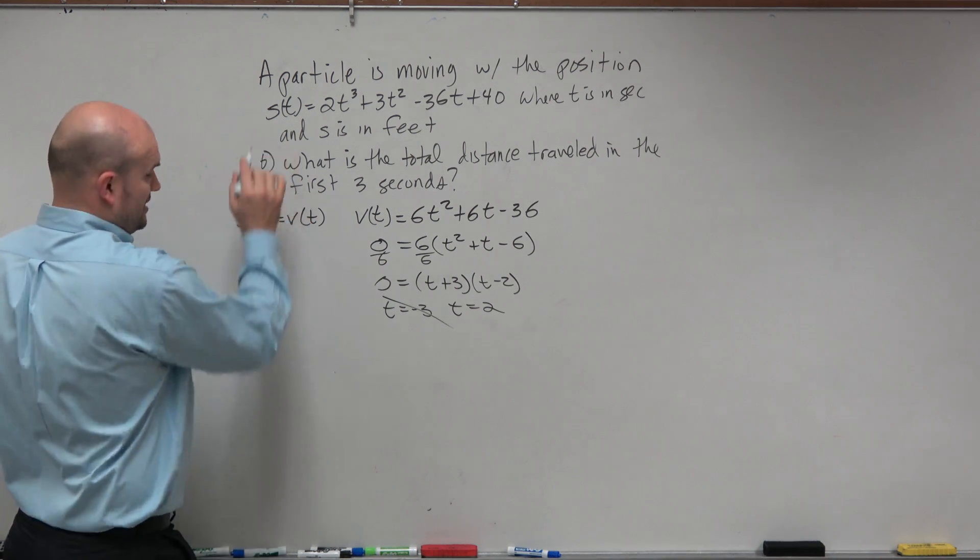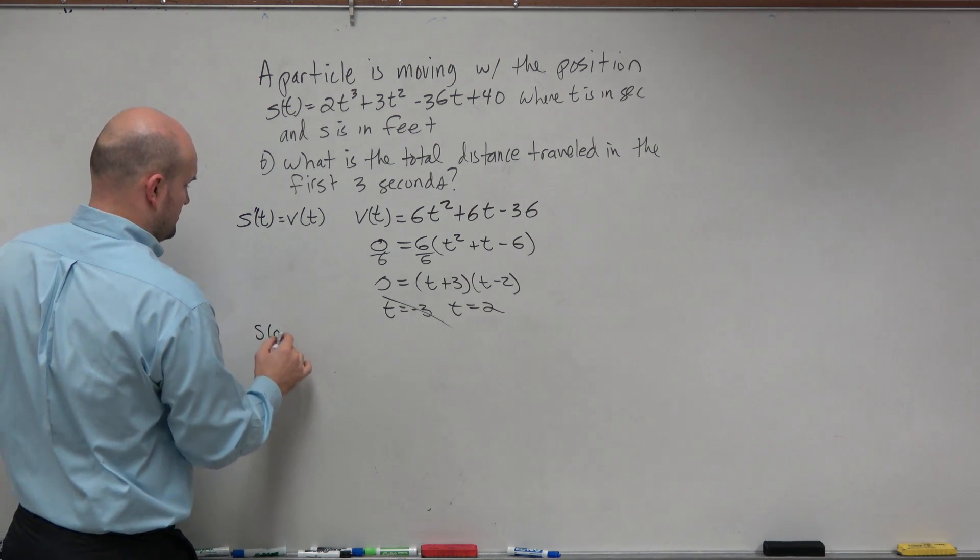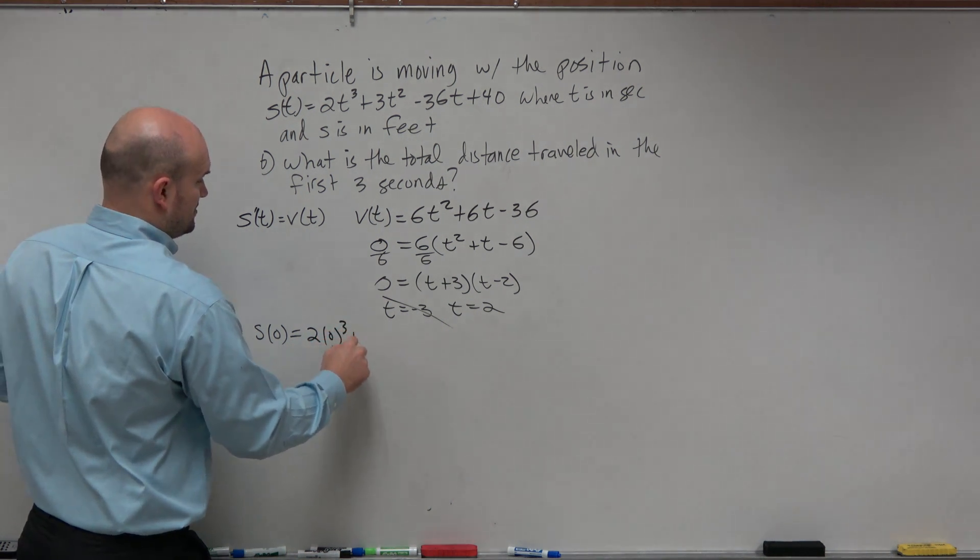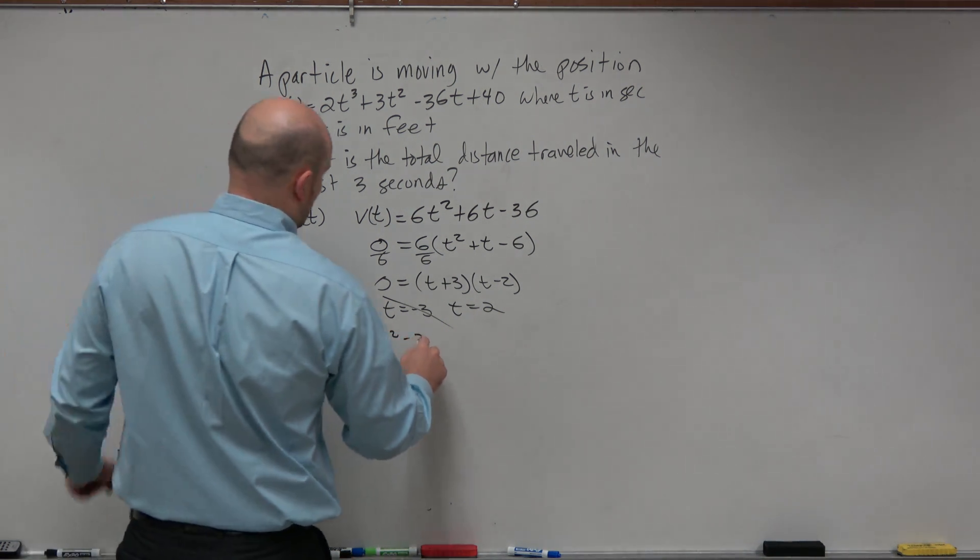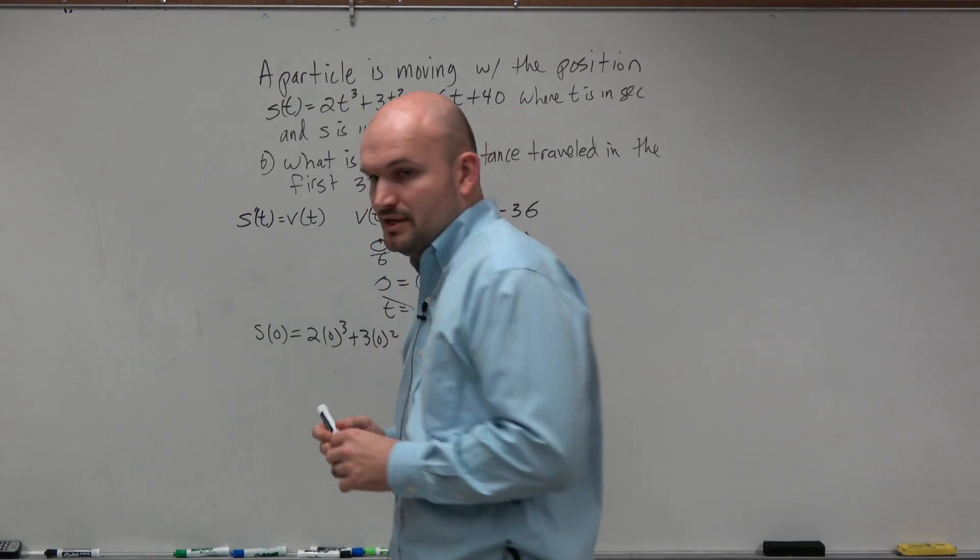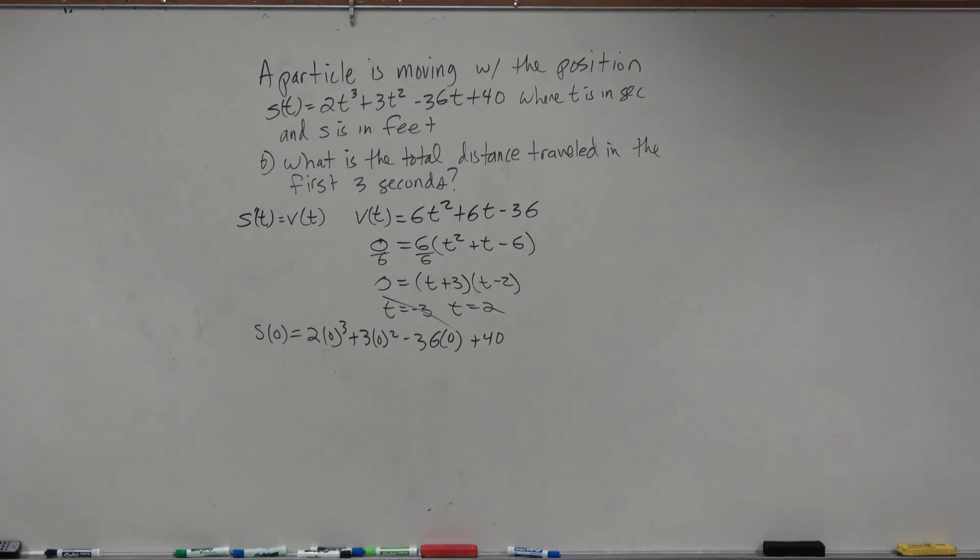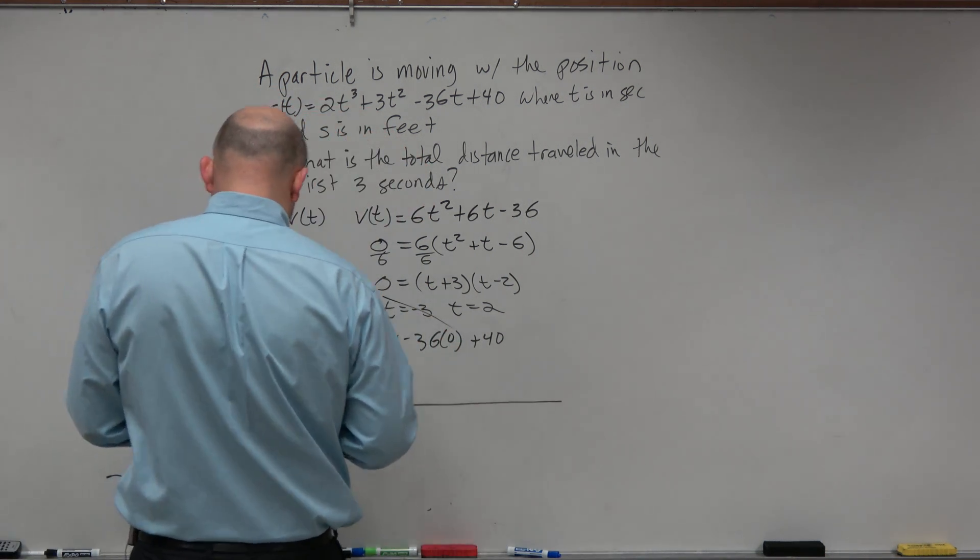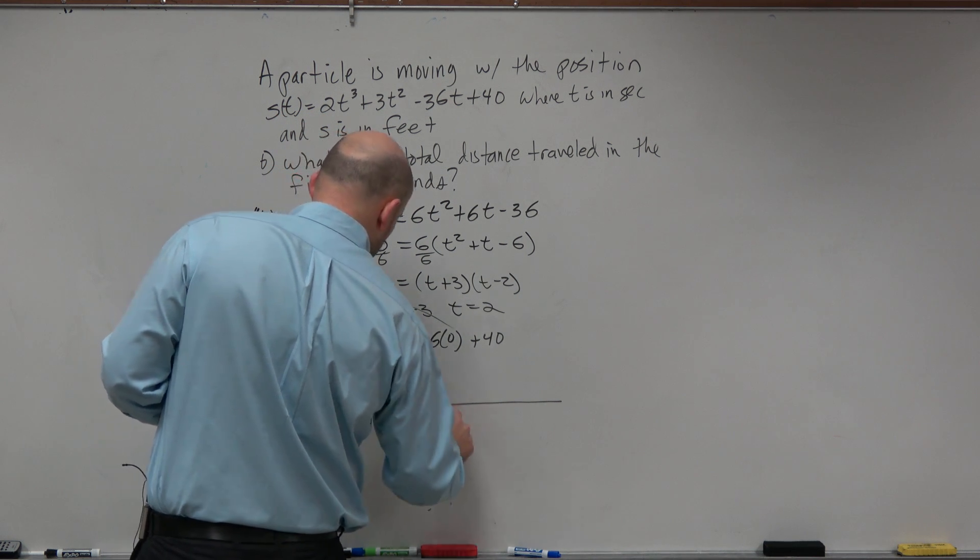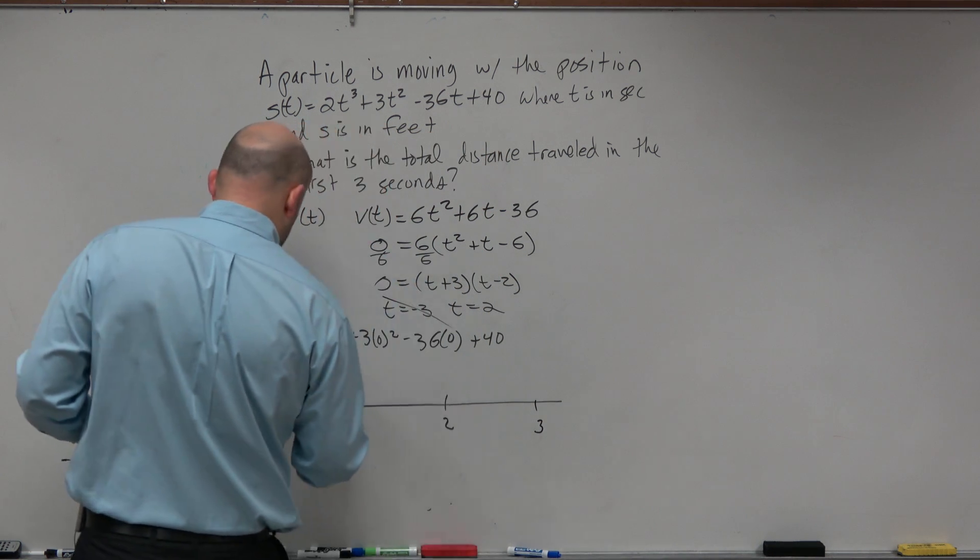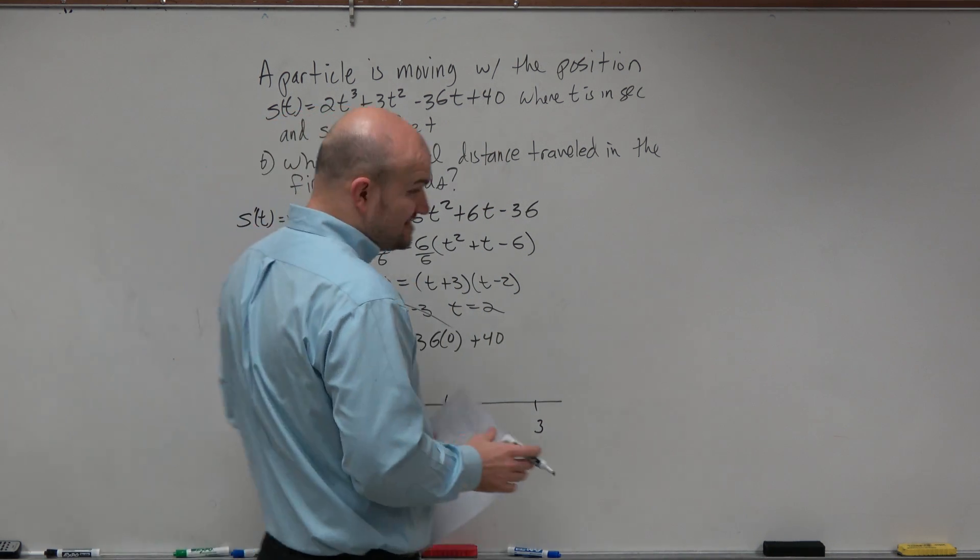So we're going to take our position function. And let's figure out at s of 0. So I can do 2 times 0 cubed plus 3 times 0 squared minus 36 times 0 plus 40. So we can say at s of 0 equals 40.